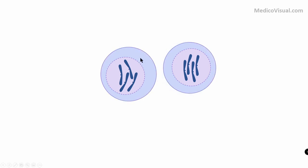Ultimately we now have two daughter cells, each with an equal number of DNA. Each daughter cell has chromatids, but before the next mitosis starts — in interphase — another chromatid copy will form to complete a chromosome. Now you know the difference between chromatid and chromosome, and the concept of sister chromatids.